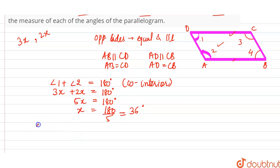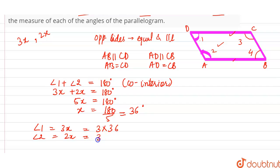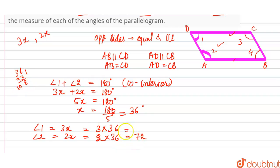Now, angle 1 is equal to 3x and angle 2 is equal to 2x. So the value of 3x will be 3 into 36, and the value of 2x will be 2 into 36. So 2 into 36 is 72 degrees, and 3 into 36 is 108 degrees. Therefore, angle 1 is equal to 108 degrees and angle 2 is equal to 72 degrees.